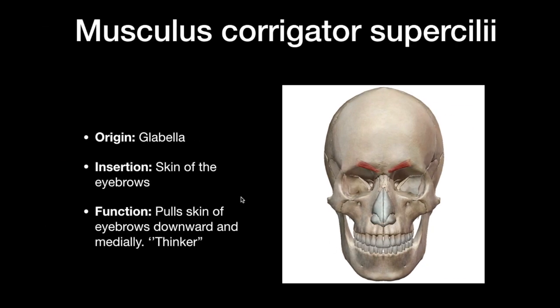We also have musculus corrugator supercilii. It originates at the glabella and inserts at the skin of the eyebrows. The function of this muscle is to pull the skin of the eyebrows downwards and medially — it gives the expression of a thinker.